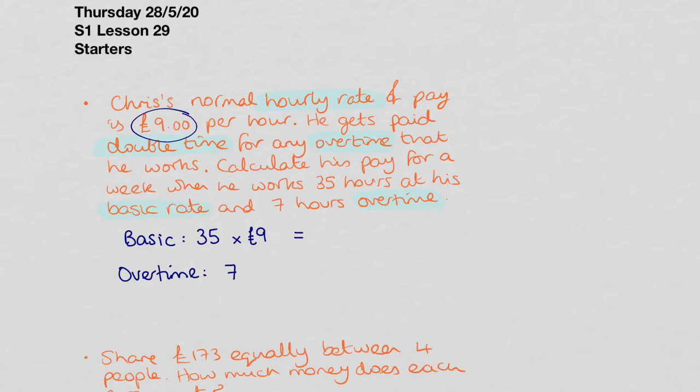For his overtime, he's working seven hours, but at double time. So that means for every hour of overtime that he works, he gets paid twice as much as he would normally. So he's getting two times £9 for each of those hours. So you can see what we're working out there is 7 times 18. So it's okay to use a calculator or not.